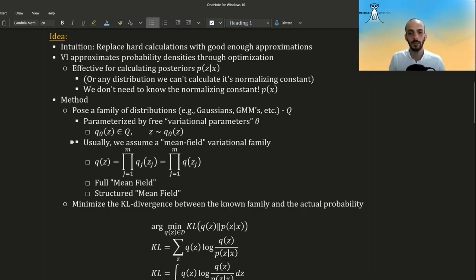And usually we assume a mean field variational family. This is another approximating assumption, where if we have a posterior over multiple dimensions, we are using one dimensional distributions to approximate each dimension. So we are basically only approximating the marginals and we are losing the correlations between the different Zs. This is called full mean field. If we are allowing to keep some correlations, then this is called structured mean field.